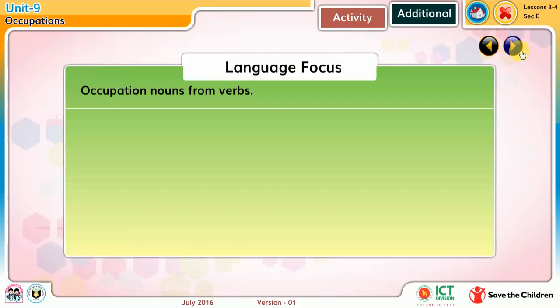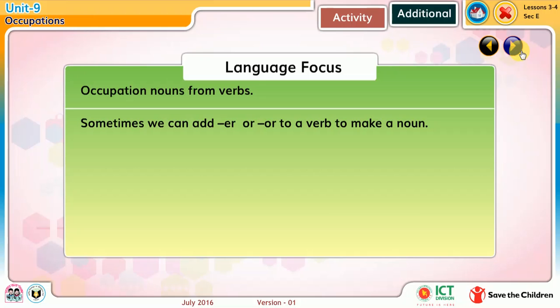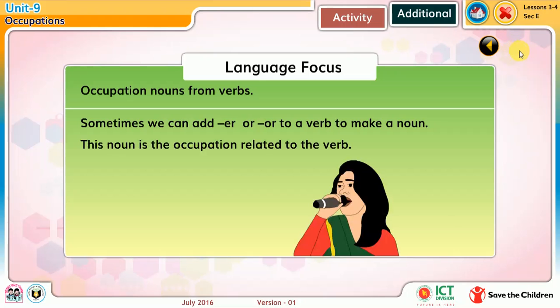Language focus: Occupation nouns from verbs. Sometimes we can add -er or -or to a verb to make a noun. This noun is the occupation related to the verb.